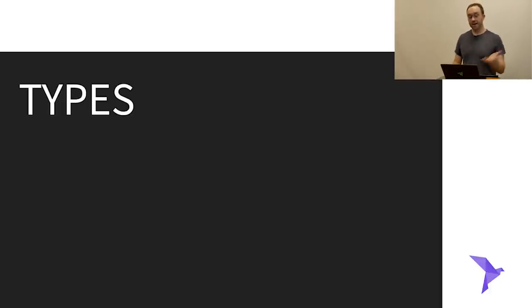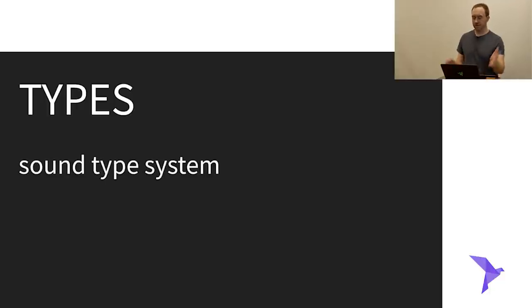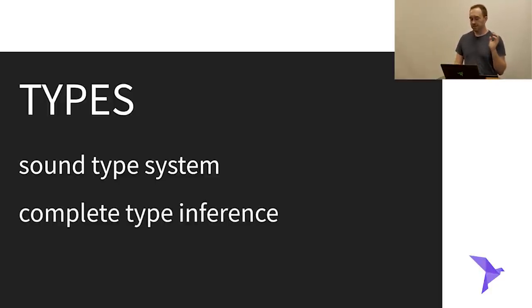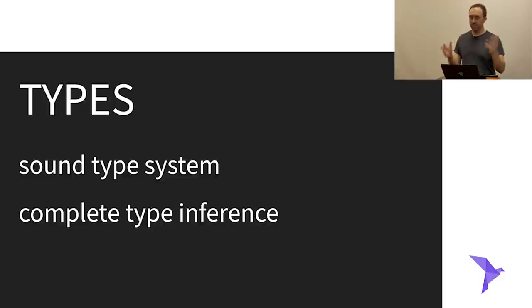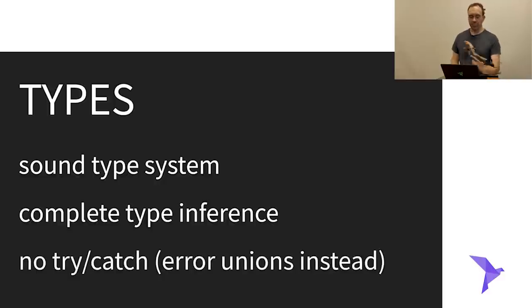Now let's talk about types. So far I haven't put any type annotations on anything, and that's because it's not necessary in Roc. Roc has a sound type system — unlike TypeScript, which is unsound by design — with complete type inference, meaning you never have to write a type annotation if you don't want to. The type inference always correctly infers the most general type possible for the code you've written. Also, Roc does not have try-catch. Instead, we use error unions for error handling, which I'm excited to demo a little later.